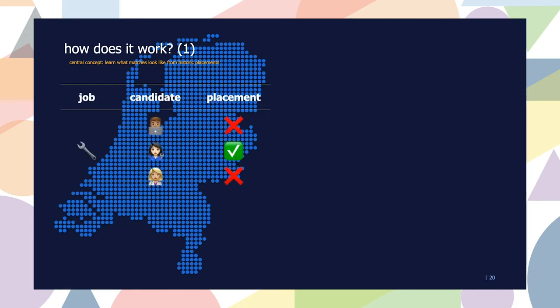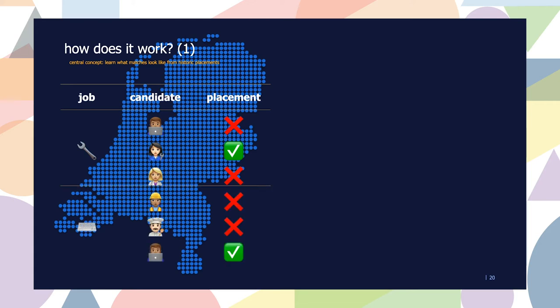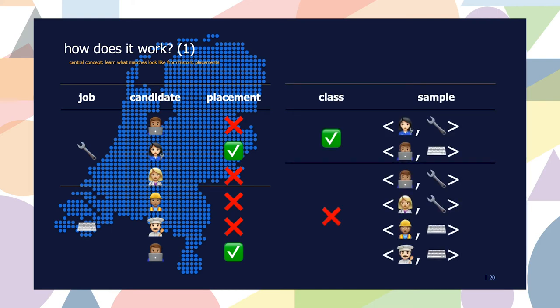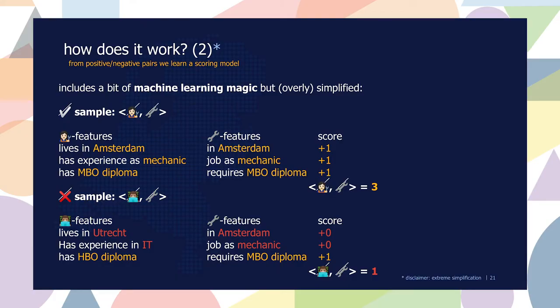The central concept is that we learn from historic placements. To illustrate with a simple example: imagine we have a job in mechanics and three candidates — an IT person, a mechanic, and a doctor. We know historically that the mechanic got placed and the others didn't. For another job — an IT job — with a construction worker, a cook and an IT person as applicants, the IT person gets placed. Using this historic data we train a machine learning algorithm to distinguish between two classes: matching pairs and non-matching pairs.